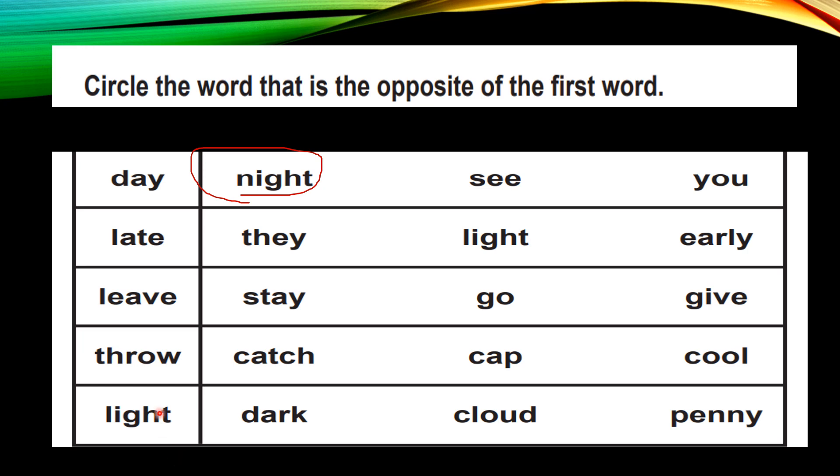Now we will see the other one, that is late. If you are going late, opposite of late is early. You should go early, so we will mark here early. Now here light is there, light dark, light opposite is dark. They, they is for these and those, so they will not come here. So late opposite is early, day opposite is night.